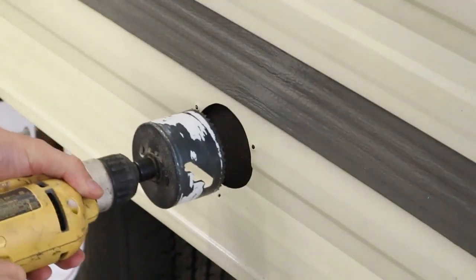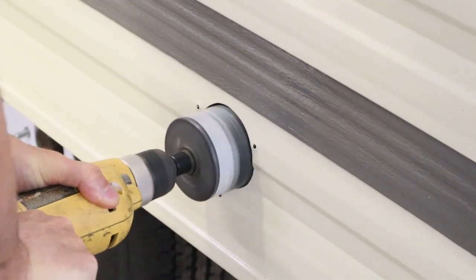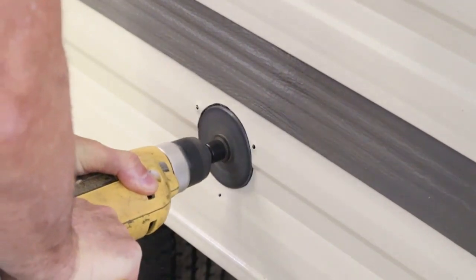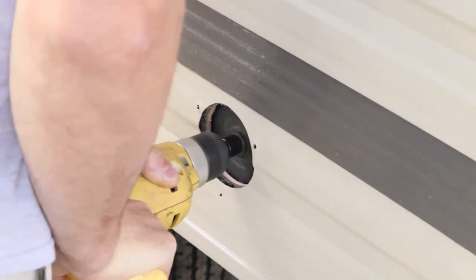I started this process by locating the point where I wanted to drill a hole in the side of the trailer for the 30 amp plug-in. I used a 3-inch hole saw and drilled all the way through from the outside skin to the interior of the trailer.